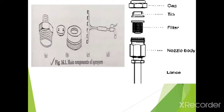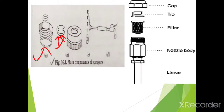Now let's see the different parts of the sprayer. First part is the nozzle body, shown in figure A. Nozzle body is the main component on which other components of a nozzle fit. Then the next component is the swirl plate. It is the part of the cone nozzle which imparts rotation to the liquid passing through it. Through this swirl plate the liquid starts to rotate and then passes through it.